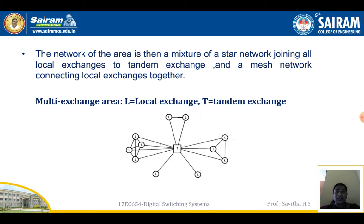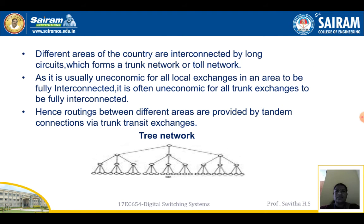The figure shows a multi-exchange area with local exchanges and a tandem exchange. Different areas of the country are interconnected by long circuits which form a trunk network or toll network. As it is usually uneconomic for all local exchanges to be fully interconnected, it is often uneconomic for all trunk exchanges to be fully interconnected. Hence, routings between different areas are provided by tandem connections via trunk transit exchanges.